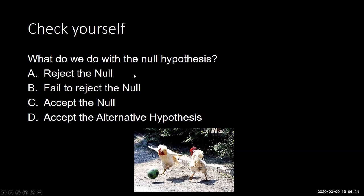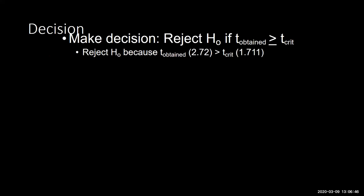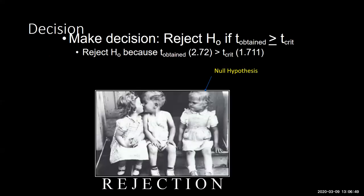We rejected the null. I want to point out that we calculated a T-score — sometimes called T-obtained or T-calculated — and we got 2.72. This is different from the T-critical, which is 1.711, the value we looked up in the table. Because our calculated T value of 2.72 is larger than our T-critical of 1.711, we rejected the null.